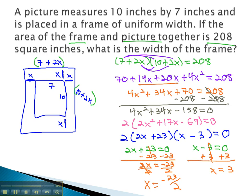Remember, x represents the width of the frame. It would not have a negative width, so we can throw the negative number out. The only answer left for the width of the frame is x equals 3, telling us our frame has a width of 3 inches.